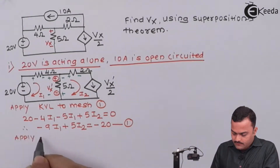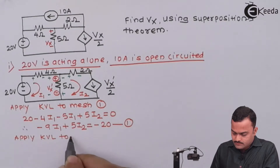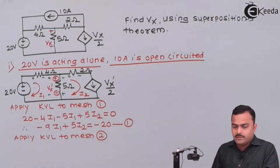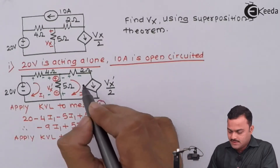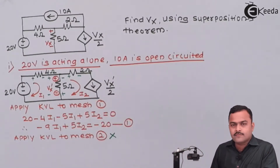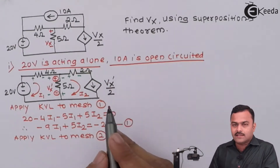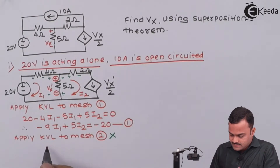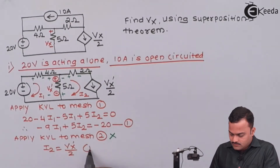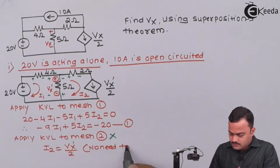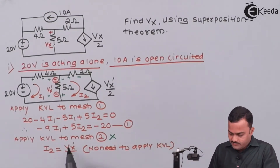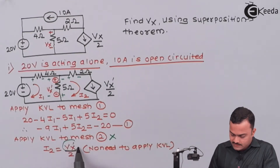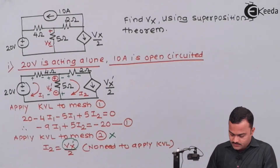Applying KVL to mesh 2 — the answer is no, we cannot directly, because only a current source is present in that mesh. So we can straight away write I2 equals Vx dash divided by 2. No need to apply KVL. The problem is that Vx dash is not a variable in our list; we only have I1 and I2. So we need a substitution equation for Vx dash.